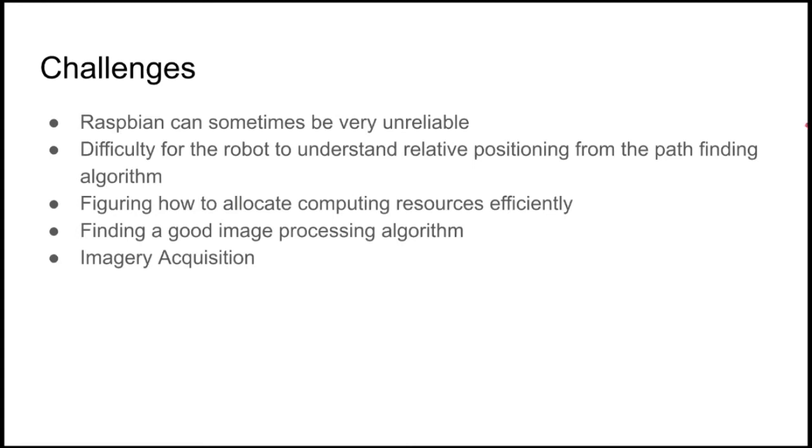Additionally, it was also difficult for the robot to understand its relative position using the pathfinding algorithm. Due to the fact that there was no GPS for the robot that was attached to the robot, the robot had no way of understanding where exactly it was in the map. The only thing it knew was the past actions it did and the future actions that it needs to do. If there was one small problem where the robot took a turn a bit too much, it could deviate the robot from the target and cause it to not actually reach its target.